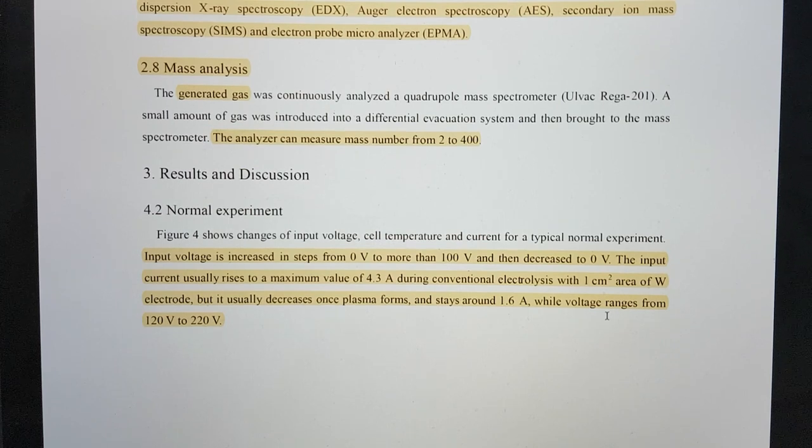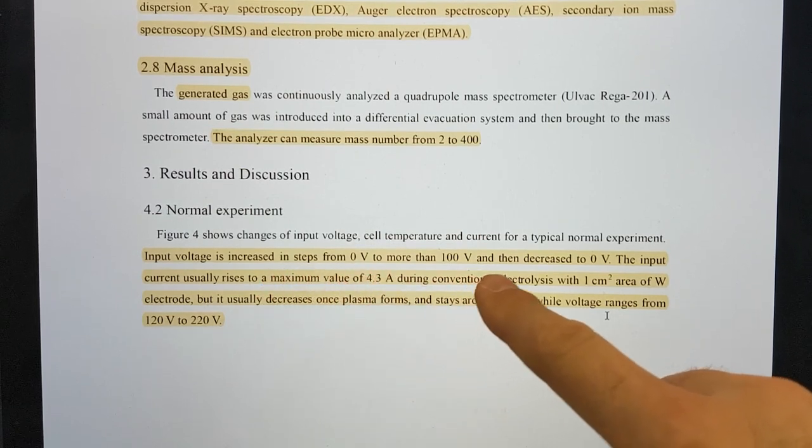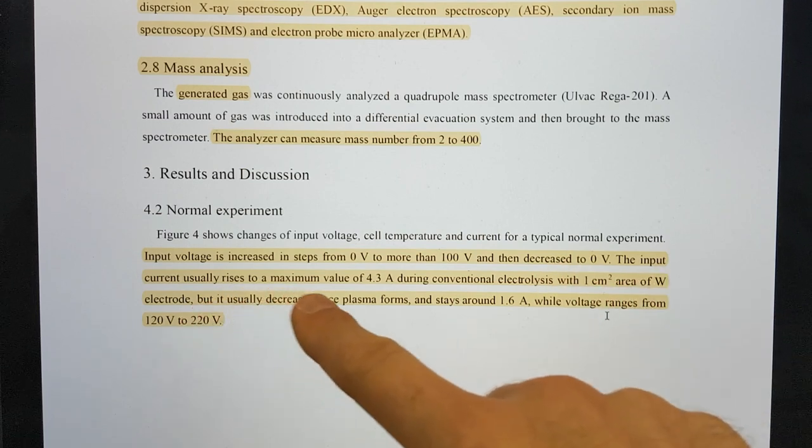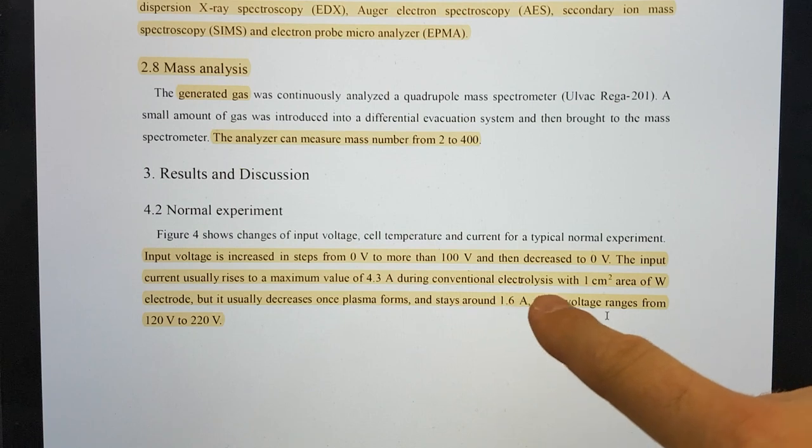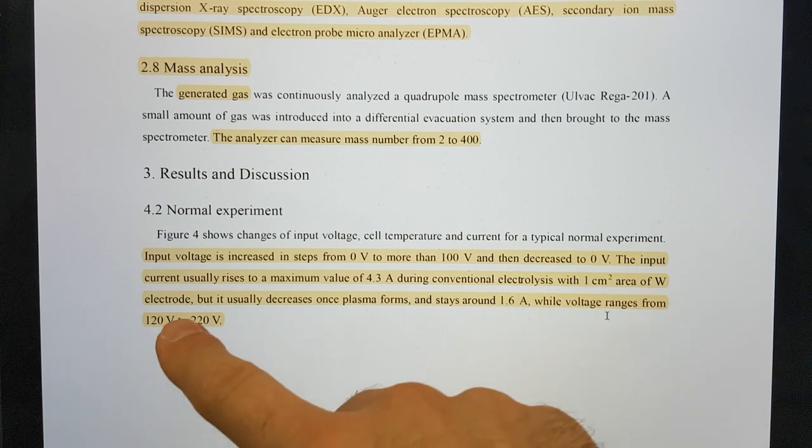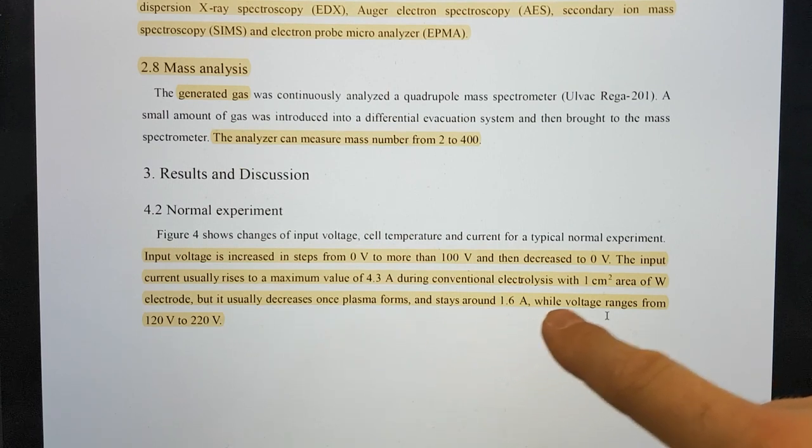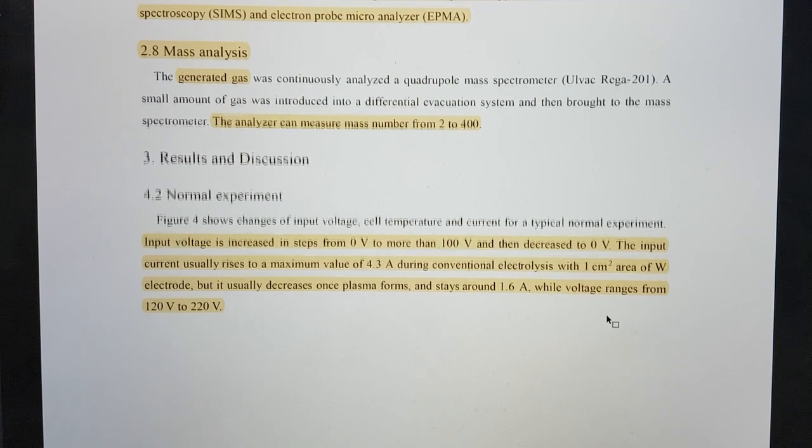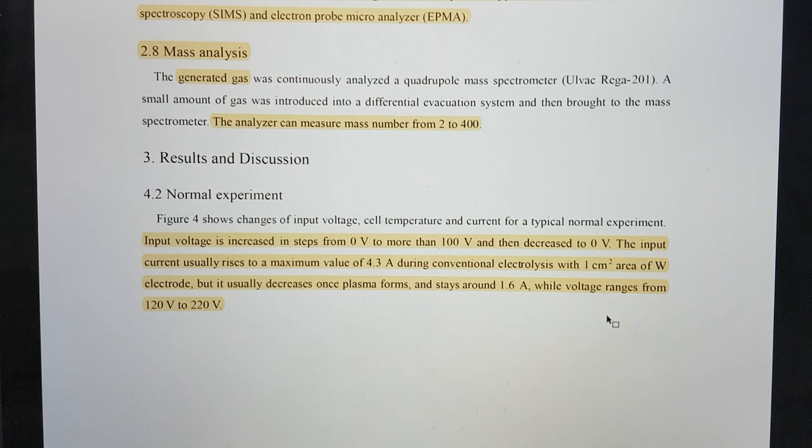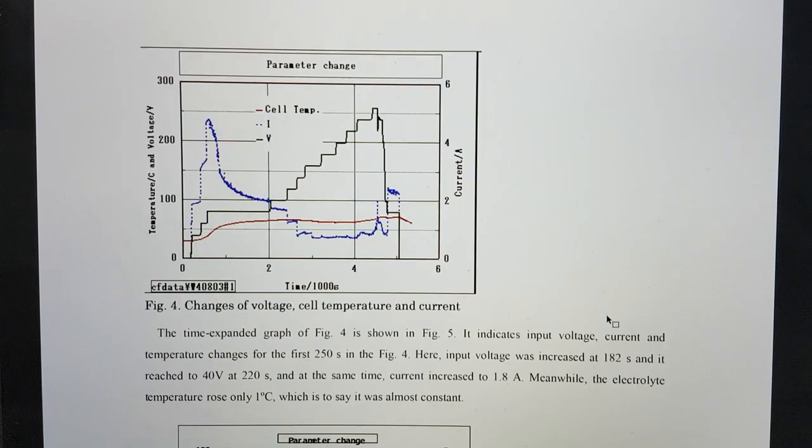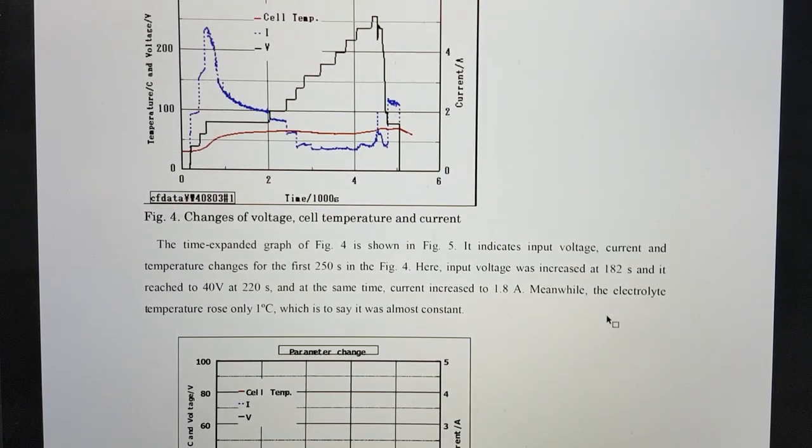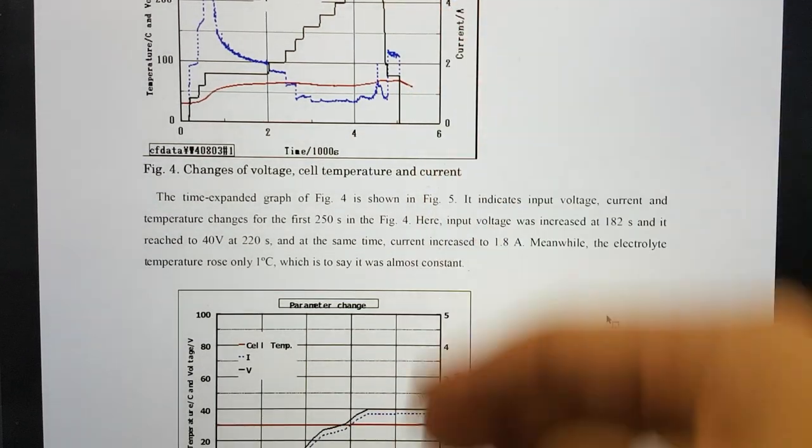In the normal experiment, input voltage is increased in steps from 0 volts to more than 100 volts then decreased to 0 volts. The input current usually rises to a maximum of 4.3 amps during conventional electrolysis with one square centimeter area of tungsten electrode, but it usually decreases once plasma forms and stays around 1.6 amps while voltage ranges from 120 to 220 volts. The current drops when the plasma is in the water because there is a more efficient conductor effectively in play.